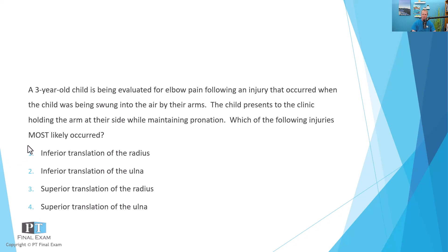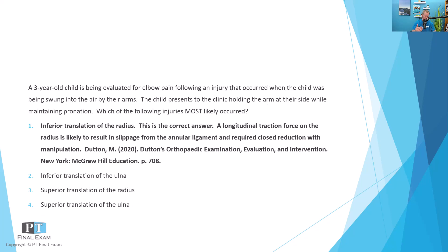This is talking about what is classically known as an annular dislocation or pulled elbow syndrome, related to the annular ligament of the radius. The correct answer is inferior translation — a traction injury done to the radius by holding the child by their hands and swinging them or creating a longitudinal traction force. The radial head is typically held in place by the annular ligament, which permits pronation and supination.